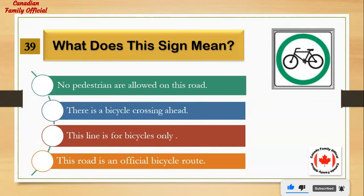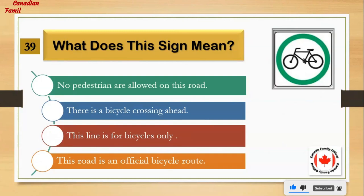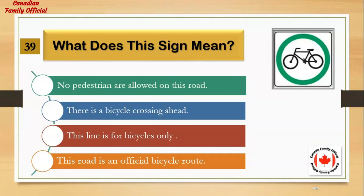What does this sign mean? Number 1: no pedestrians are allowed on this road. Number 2: there is a bicycle crossing ahead. Number 3: this lane is for bicycles only. Number 4: this road is an official bicycle route. And the answer is: this road is an official bicycle route.